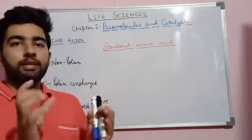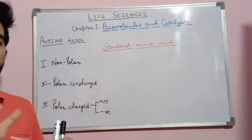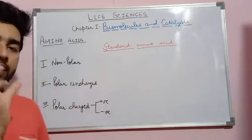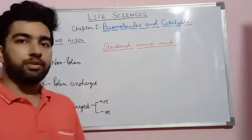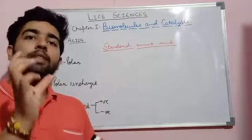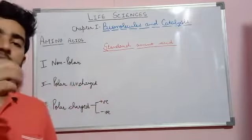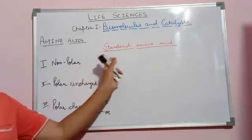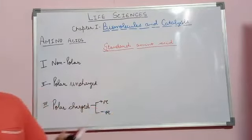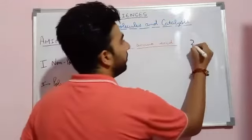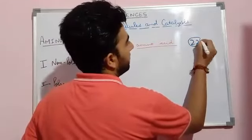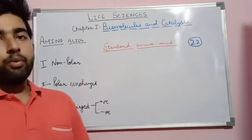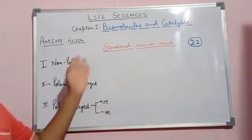Amino acids are the basic units of proteins. Those proteins that are made with the help of ribosomes during the translation process — the amino acids used in that process are known as standard amino acids. There are basically 22 standard amino acids. I already discussed mnemonics to learn the names of 20 amino acids in my previous video.